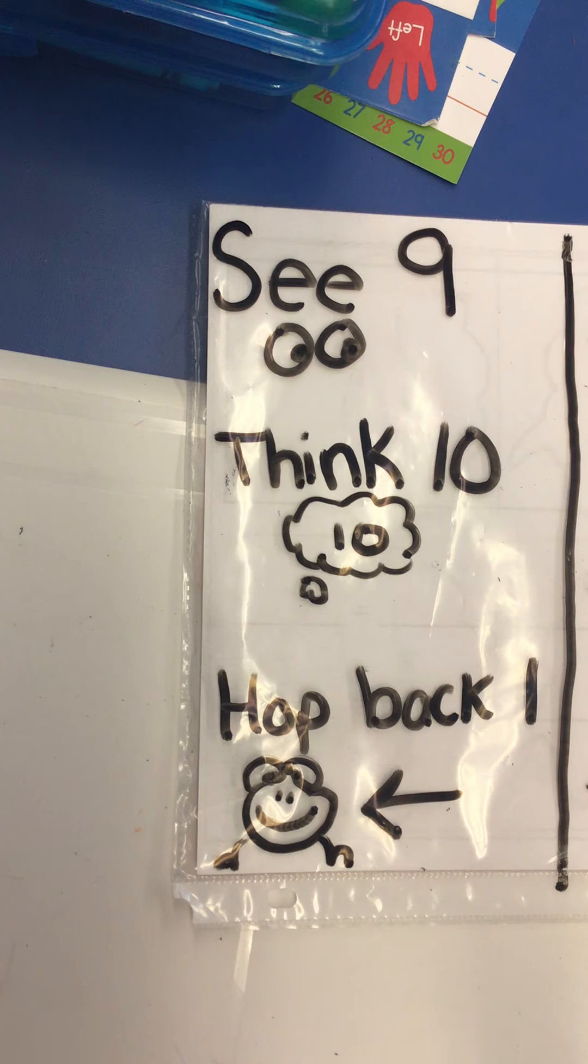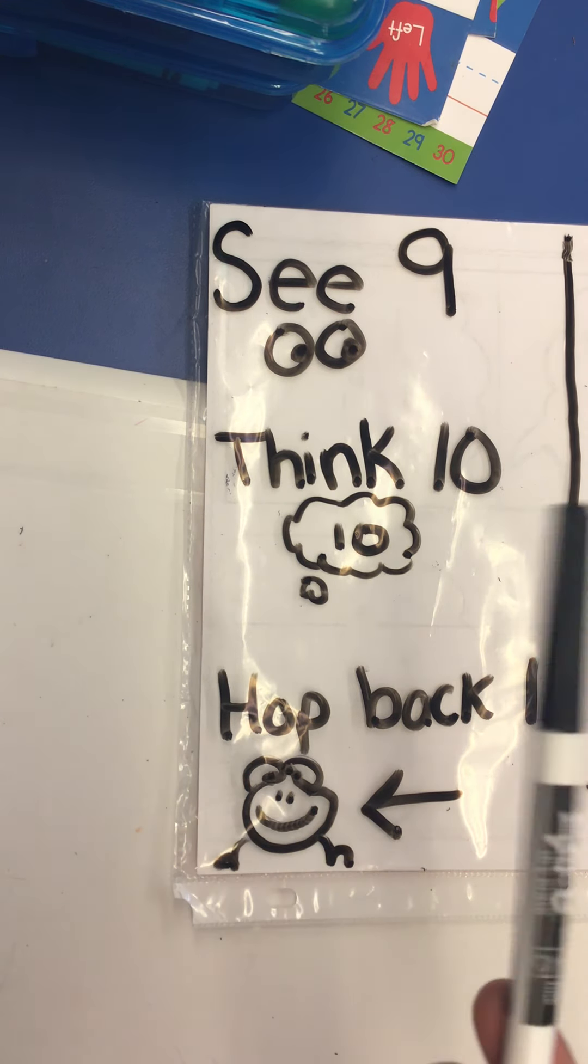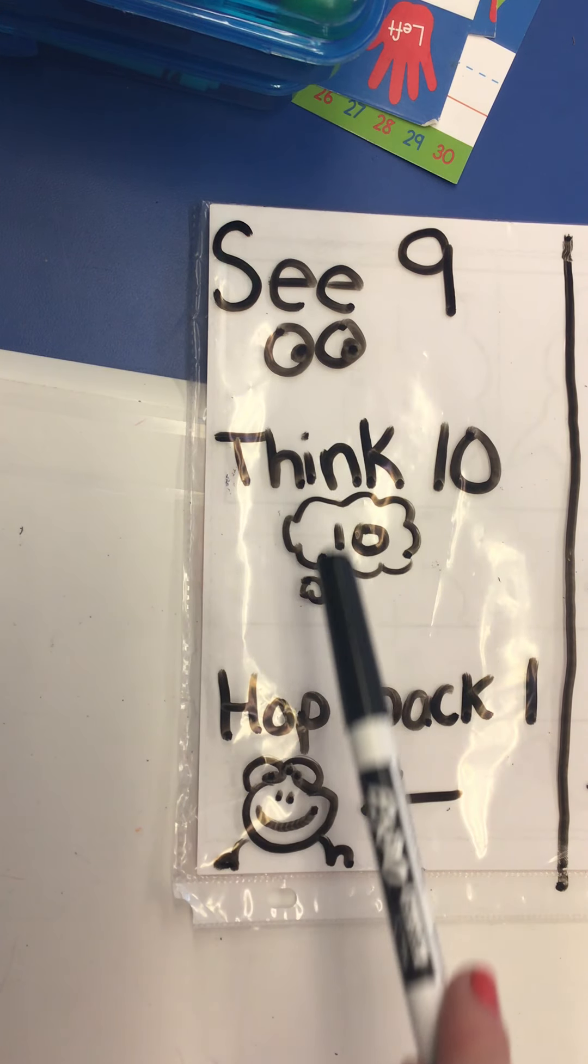So when we make 10, we know that 10 is a friendly number, and that's why we make 10, because it's easy to add things to 10. So I'd like you to say with me, are you ready? I'll go through it once.